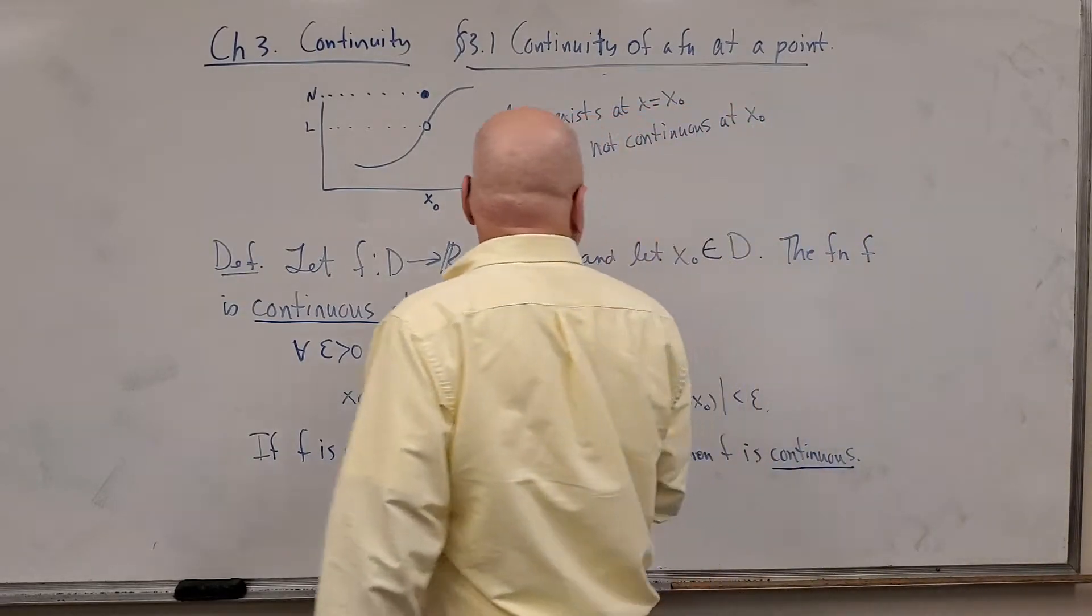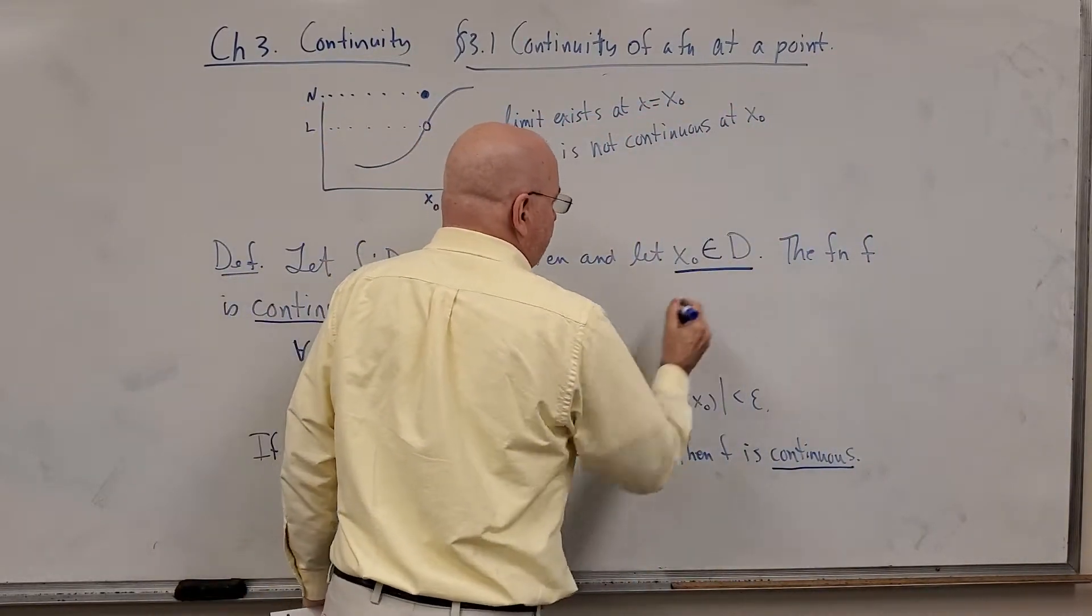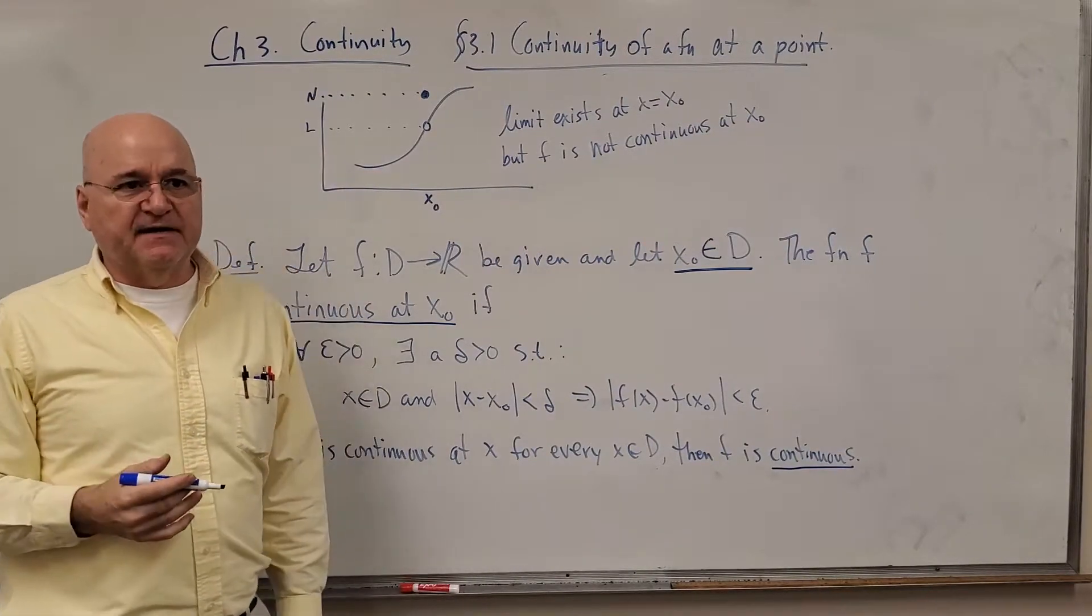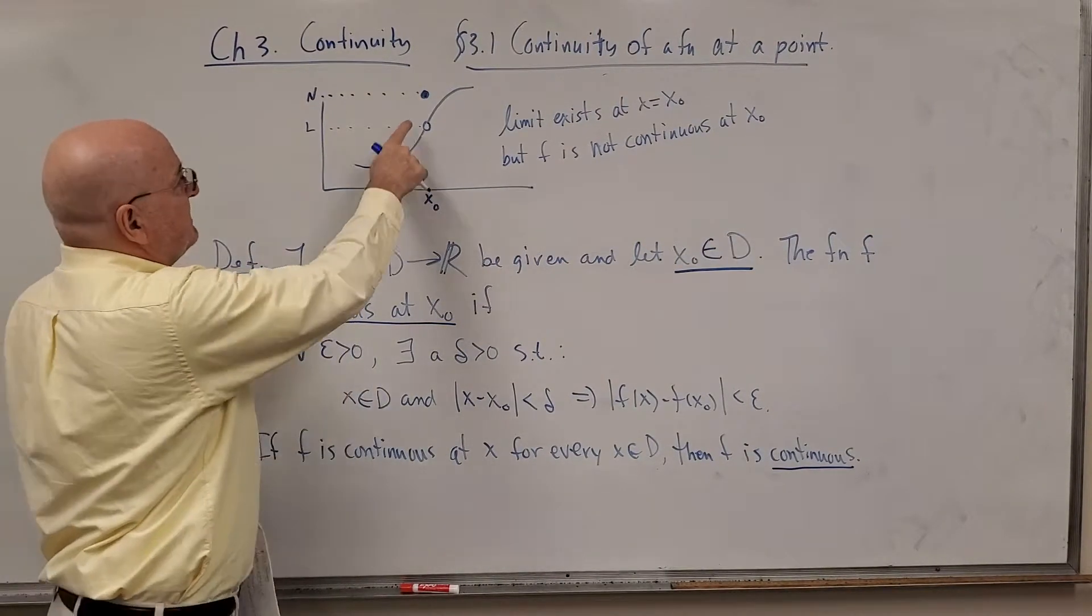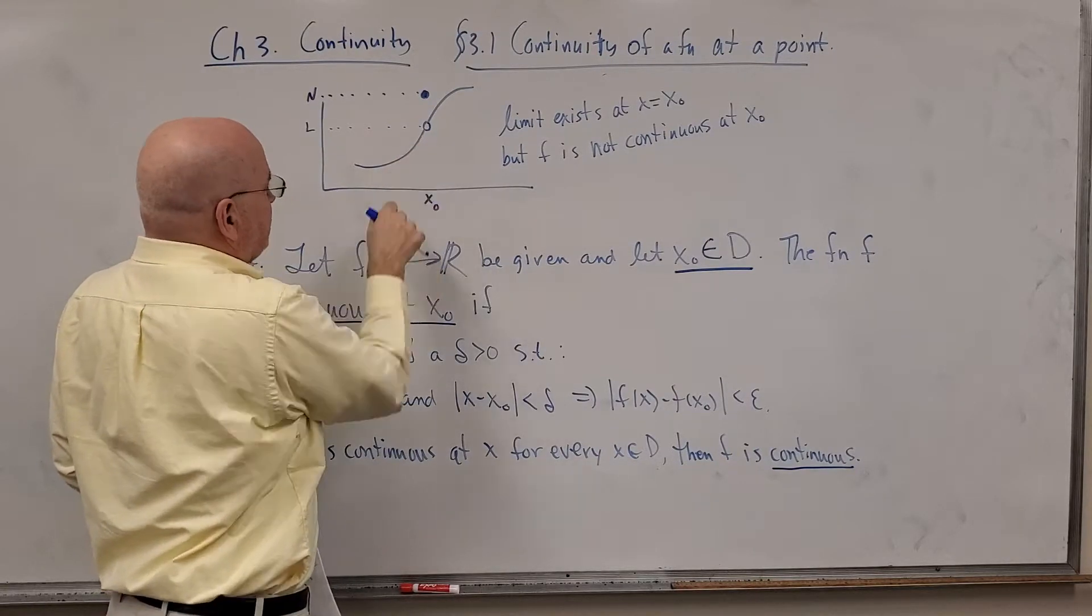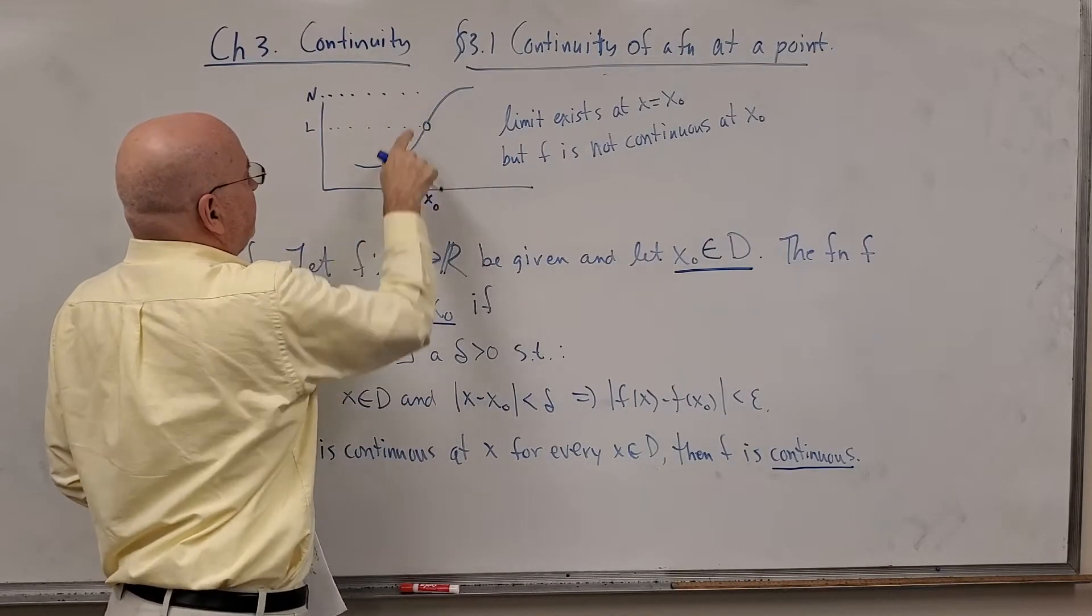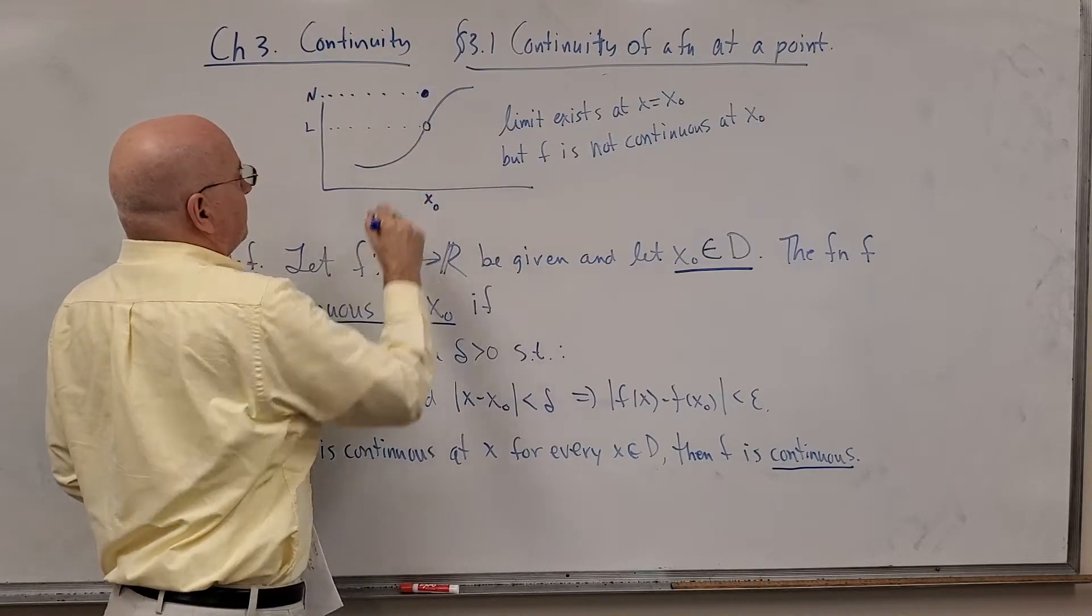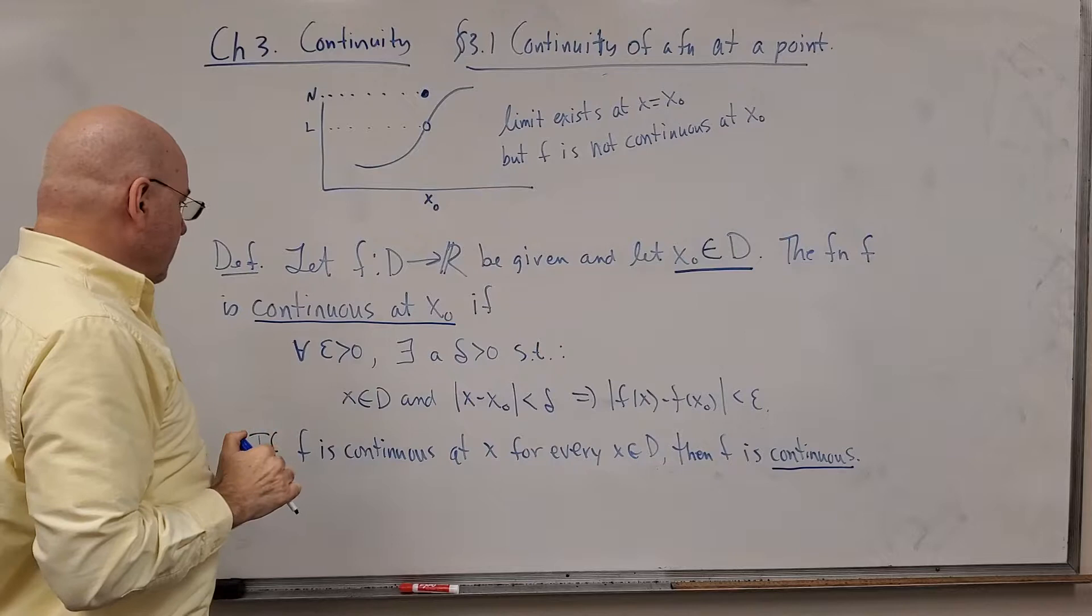Well, I'll give you a clue. First of all, in order to be continuous at the point, the function has to be defined at the point. The limit, this doesn't have to exist here for the limit to exist at X naught. If I erase that, the limit still exists at X naught.